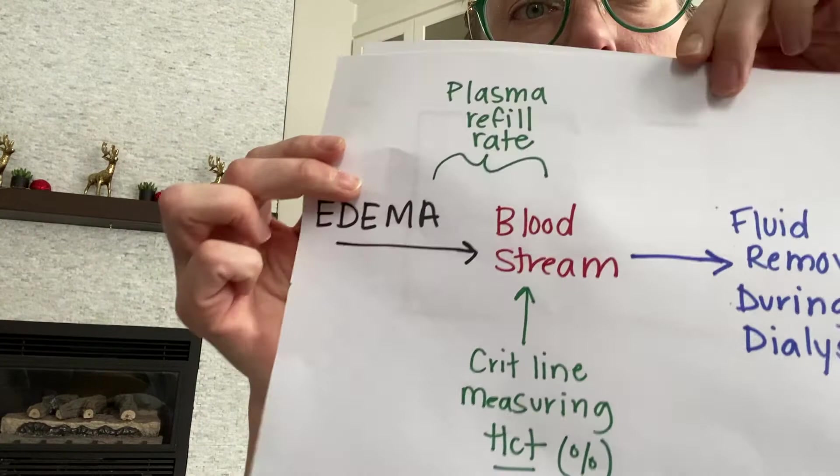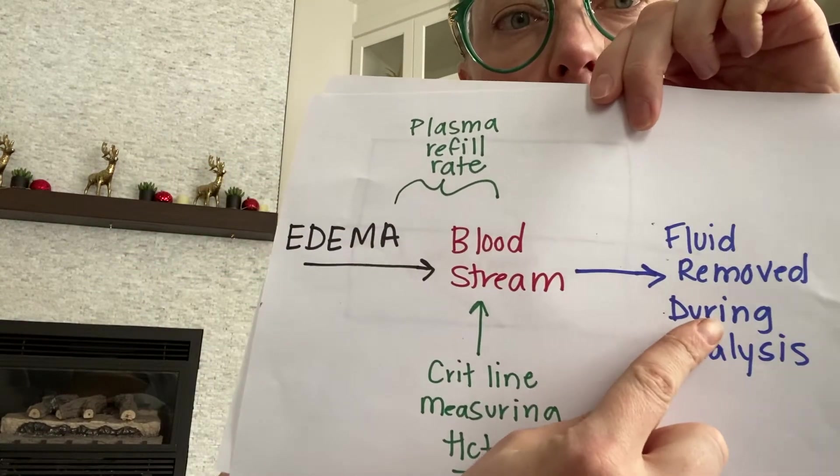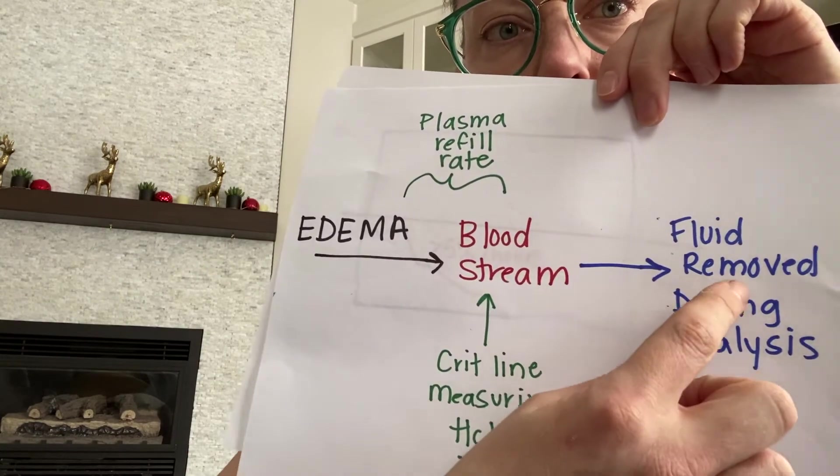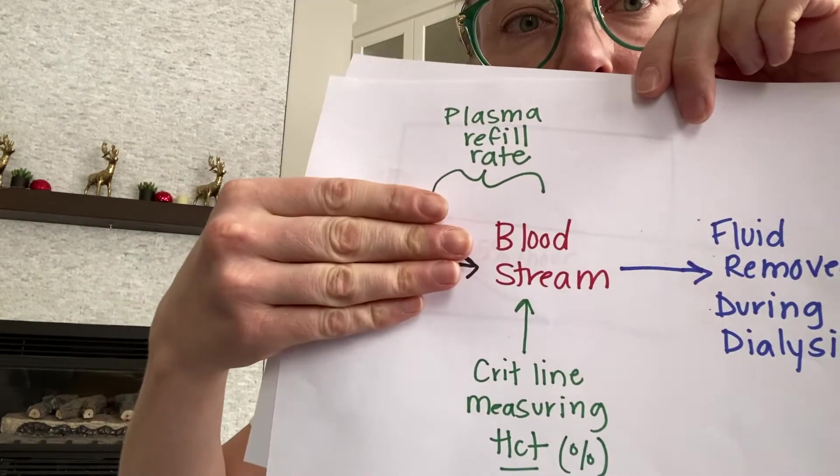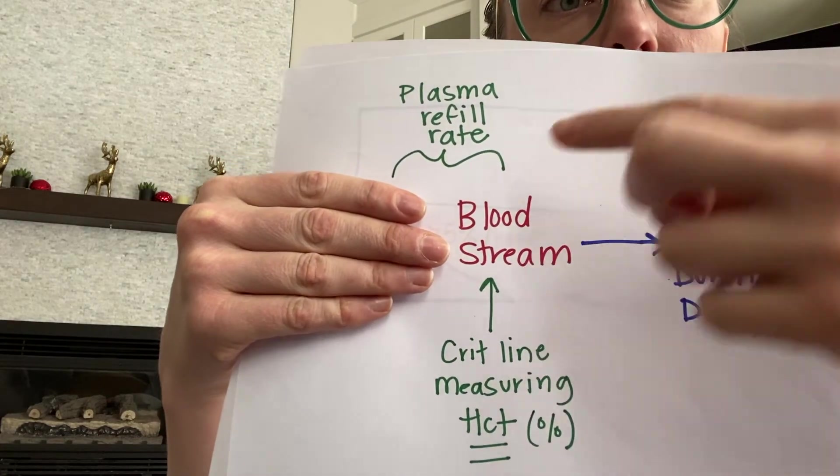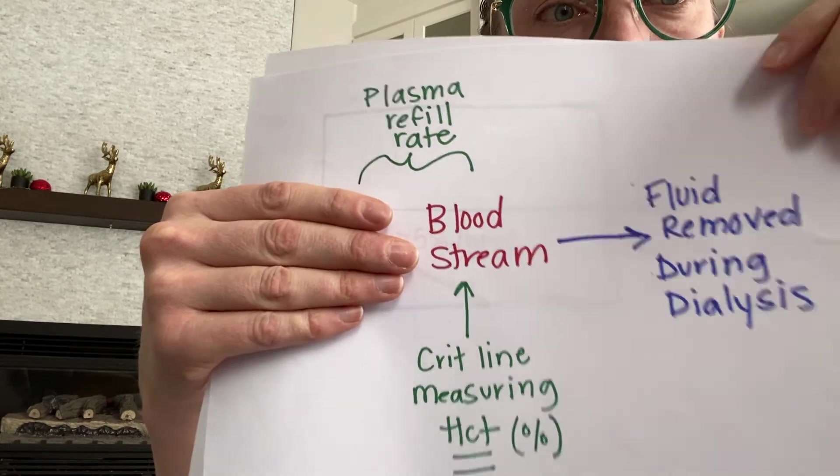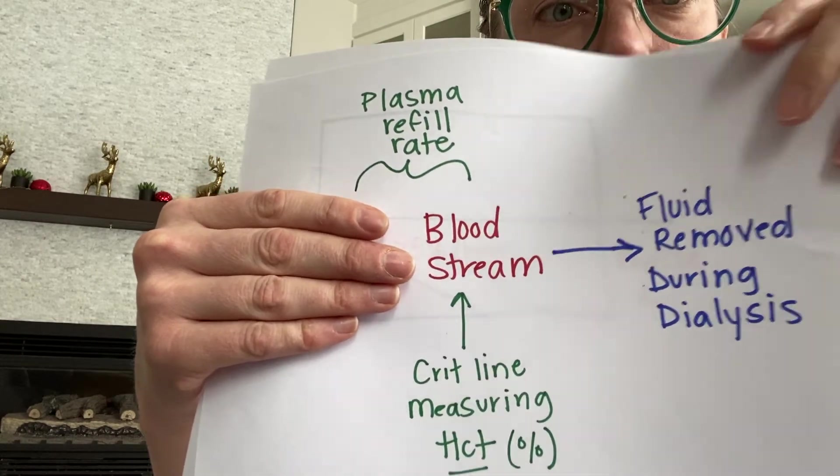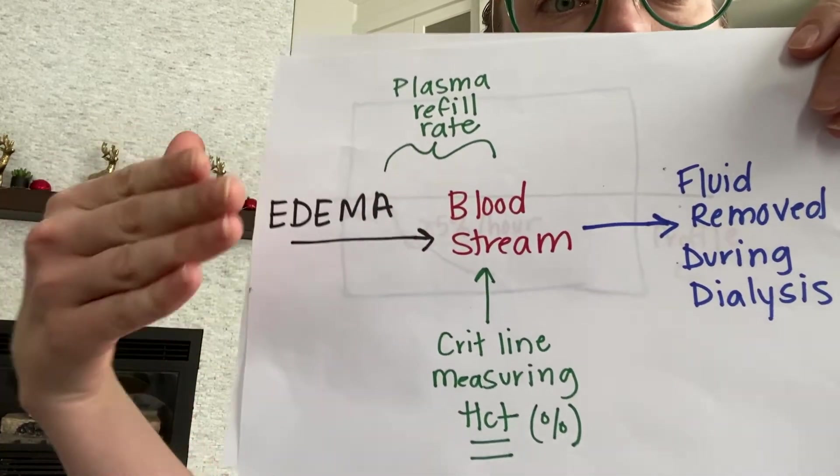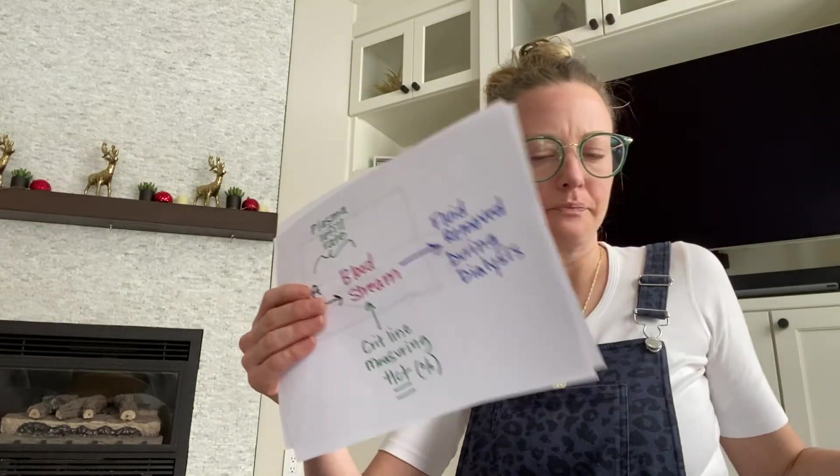In another visual, as we're removing fluid, the edema should be refilling the bloodstream. But if we're removing fluid and the patient doesn't have any edema or any fluid to give us, or we're removing it too fast, their blood pressure is going to drop. It's like we're removing fluid from them, but they're not refilling at all. They just don't have it or they're not refilling fast enough. Crit lines are complicated. That's the simplest way that I can explain it.